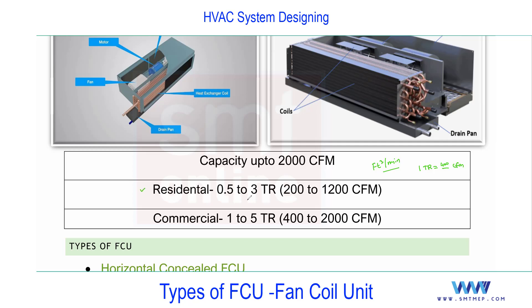Residential FCUs are available from 0.5 to 3 TR, which is 200 to 1200 CFM. Commercial FCUs go from 1 to 5 TR, up to 2000 CFM. The indoor air side unit is generally rated in CFM, while outdoor units such as condensing units or chillers are rated in tons, kilowatts, or HP.